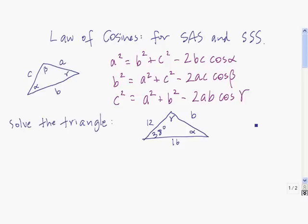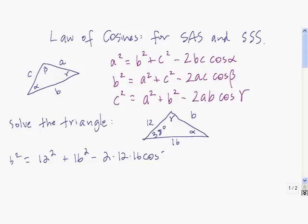Let's do an example. We'll start by using the law of cosines to find b. b squared is equal to 12 squared plus 16 squared minus 2 times 12 times 16 times the cosine of the angle opposite b. If we put this into our calculator, we find that b squared is approximately equal to 97.404.